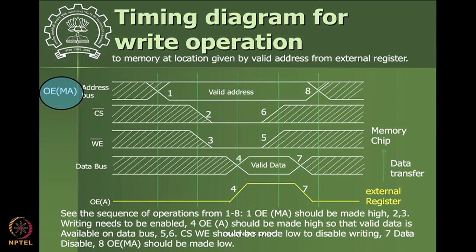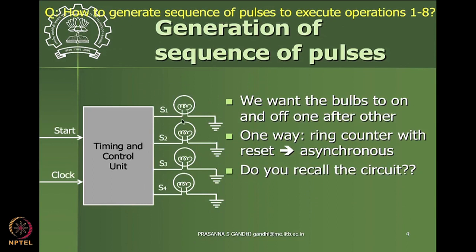How do we get this operation done by some kind of circuit or logic? We make use of sequential logic for this. Consider the problem of generating a sequence of pulses which will light bulbs one after another - S1, S2, S3, S4 in sequence. They need to be on for a while, and once S1 goes off, S2 should get lit up. If you recall sequential logic circuits, there is one example that will help here.